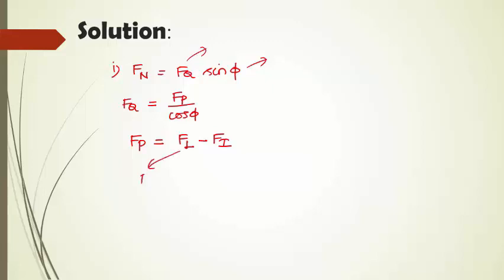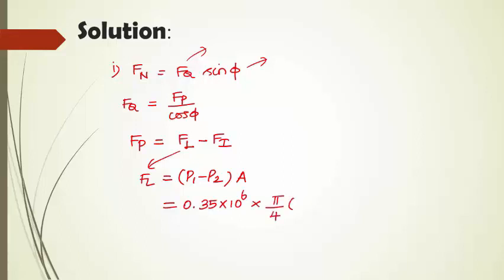Fl is the net force acting on the piston due to the steam pressure, calculated as (P1 minus P2) into the area of the cylinder. P1 minus P2 is given as 0.35 × 10⁶ N/m². The area of the cylinder is pi by 4 times D squared, where the diameter is 0.5 m. So the Fl value can be obtained as 68,722.3393 newton.